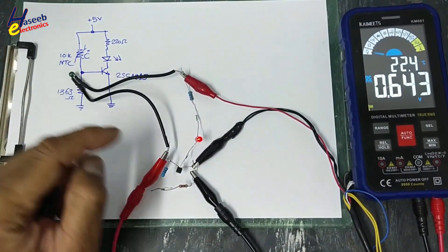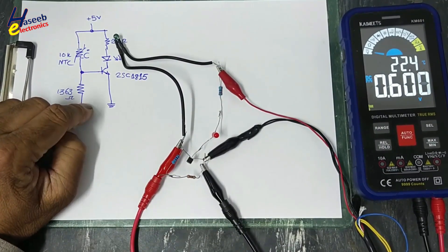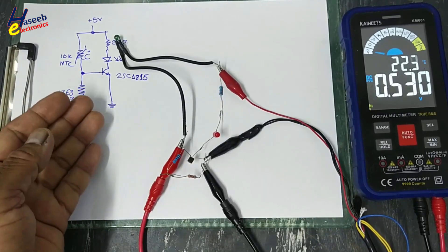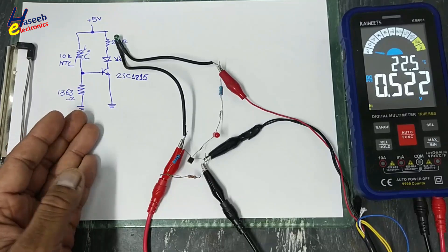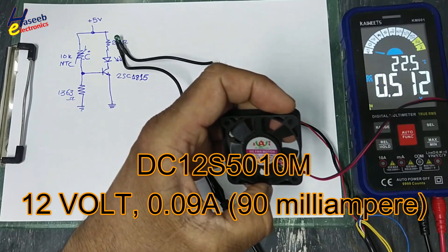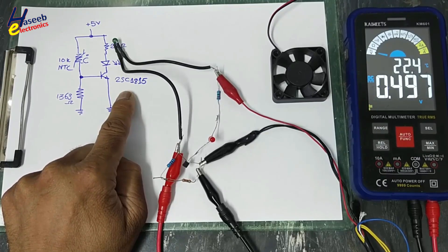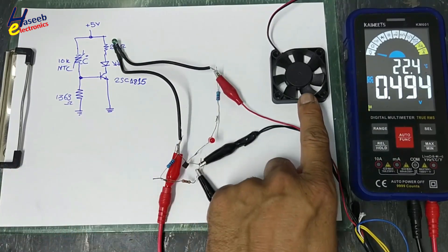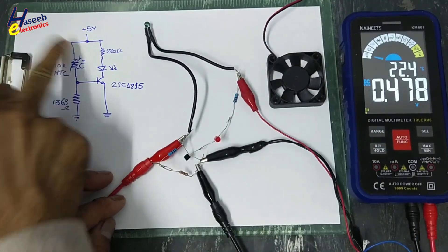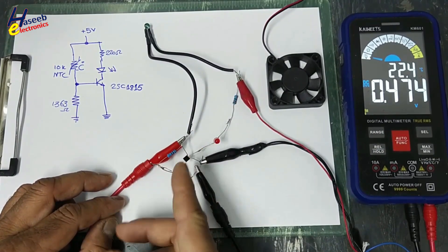We calculated the base voltage Q-point of this transistor at 0.5V. We can also design this circuit at 0.7V — it depends on our requirement. Now I will use this 12V fan. I am using the C1815 transistor rated at 150 milliamperes, so it can run this fan safely. In the last video I used it for 5V, but now let's modify this circuit to turn on this fan instead of the LED.